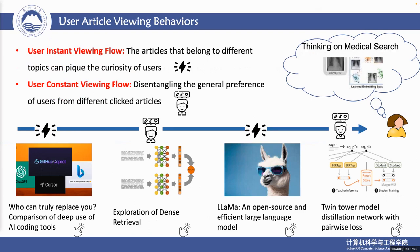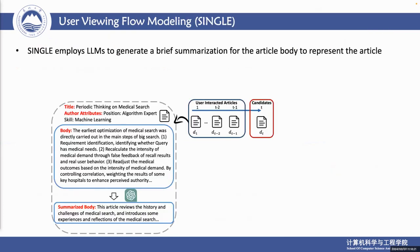As shown in the clicked articles of the user, there are some articles that belong to different topics and can pique the curiosity of the user, and the user can click these articles. Besides, some articles are of the same topic — retrieval — representing the constant interest of the user. In this paper, we propose a single model to model the different user viewing behaviors for recommending articles.